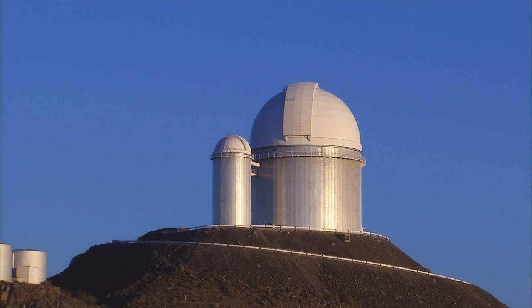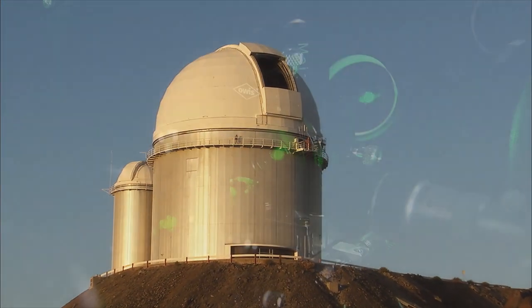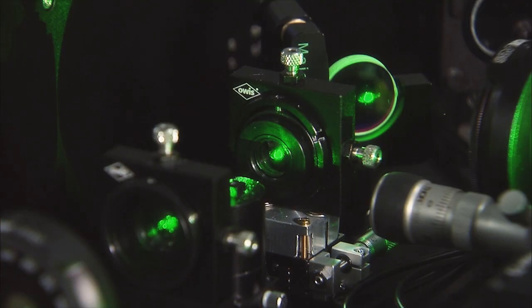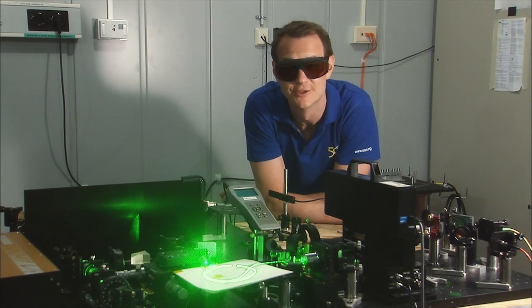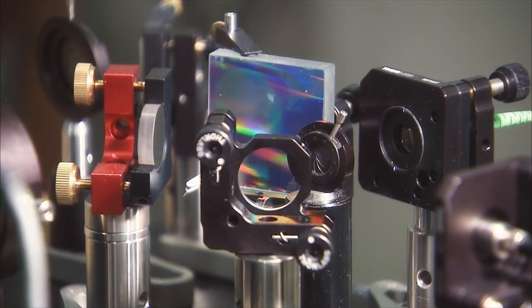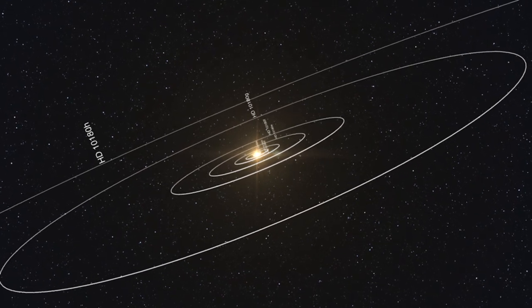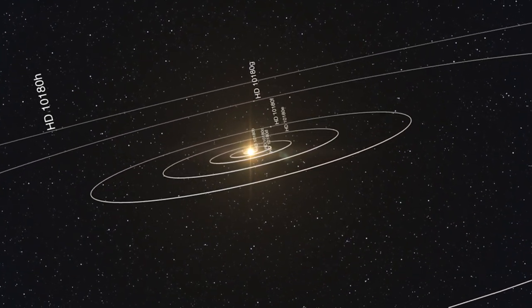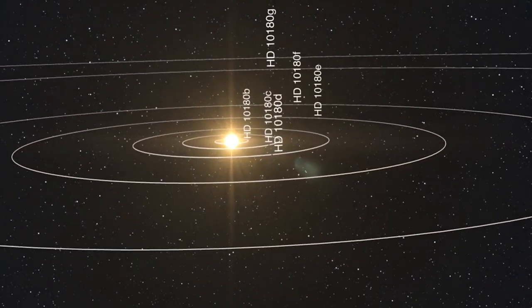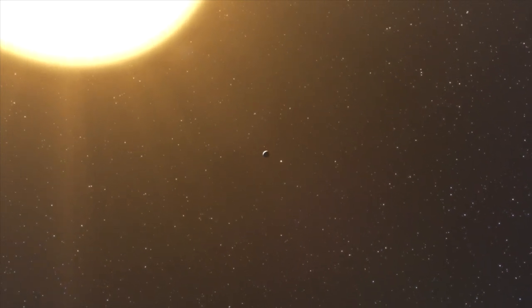ESO's venerable 3.6-metre telescope is also hunting for exoplanets. The HARPS spectrograph is the most accurate in the world. So far, it's discovered more than 150 planets. Its biggest trophy: a rich system containing at least five, and maybe as many as seven, alien worlds.